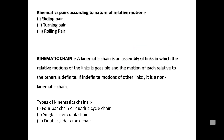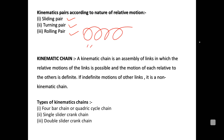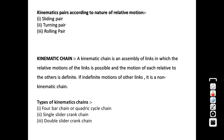Another classification of kinematic pairs depends on their relative motion: sliding pair, turning pair, and rolling pair. A sliding pair involves sliding of two kinematic links, a turning pair involves turning or rotation at the joint, and a rolling pair involves rolling over a surface.